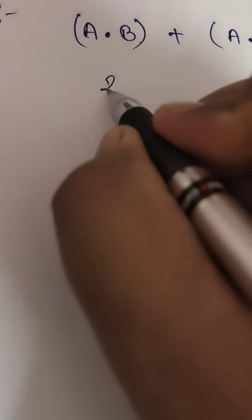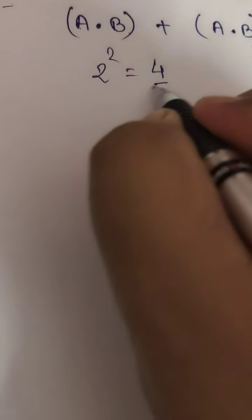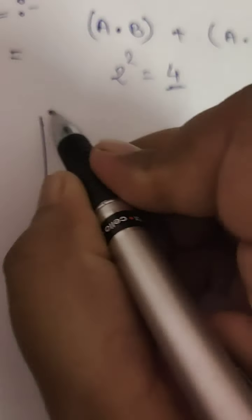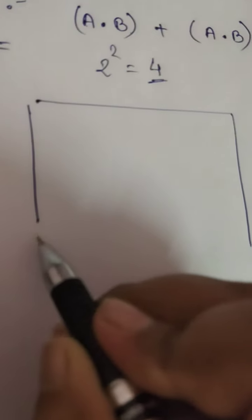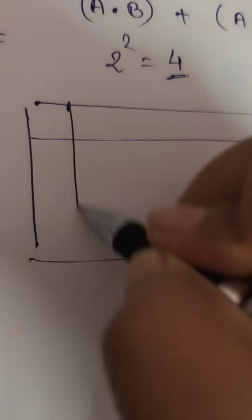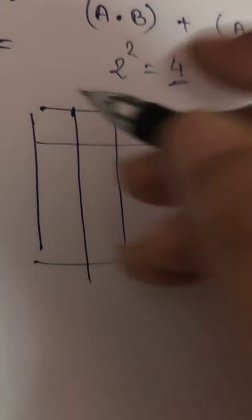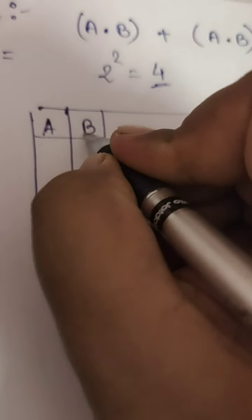If there are 2 variables, then 2 to the power 2, total possible inputs will be 4. So now we will make a diagram. See, so first we will take A and B.